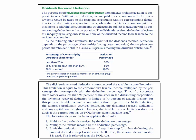A few other facts to note: the dividends received deduction cannot exceed the taxable income limitation. The limitation is equal to the corporation's taxable income multiplied by the percentage that corresponds with the deduction percentage. So if the corporate shareholder owns less than 20% of the stock in the distributing corporation, the dividend received deduction is limited to 70%. Taxable income is computed without regard to any NOL deduction, domestic production activities deduction, dividends received deduction, and any capital loss carryback.